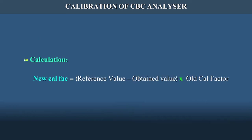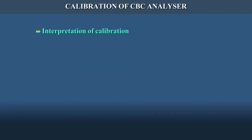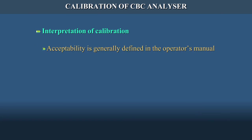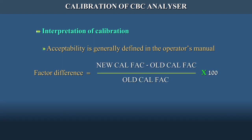Calculation: new calibration factor = (reference value / obtained value) × old calibration factor. Interpretation of calibration: acceptability is generally defined in the operator's manual. Factor difference percentage is the difference between the old calibration factor and the new calibration factor expressed as a percentage — that is, (new calibration factor − old calibration factor) / old calibration factor × 100 = factor percentage difference.